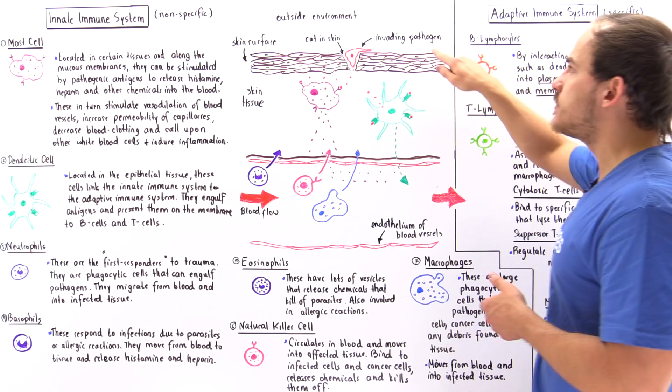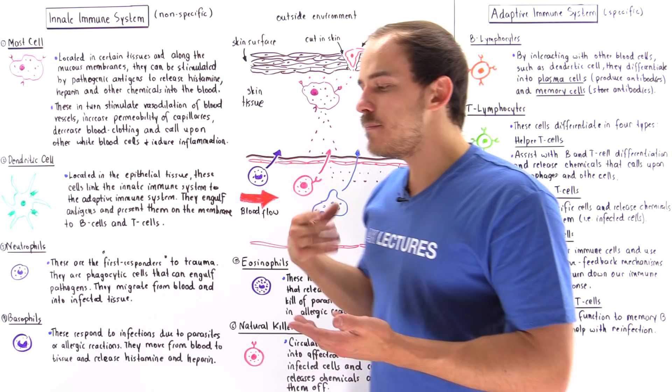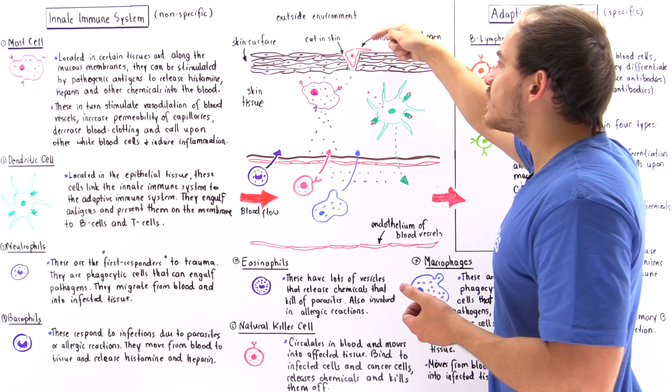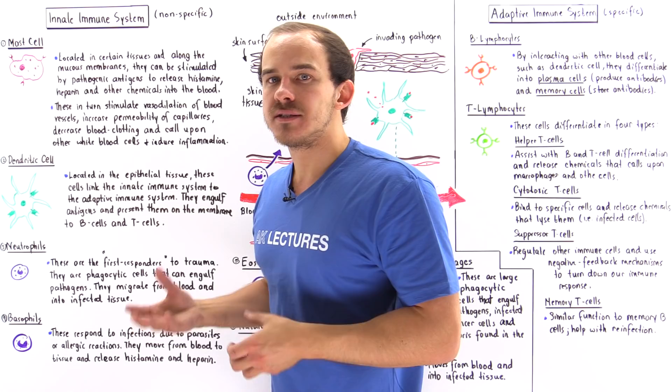The pathogen could be some type of parasite, it could be some type of viral agent, it could be some type of bacterial cell, or it could be a simple allergen. In either case, once our pathogen makes its way into our skin tissue, our immune system will elicit some type of defensive response, and this is what we're going to focus on in this lecture.